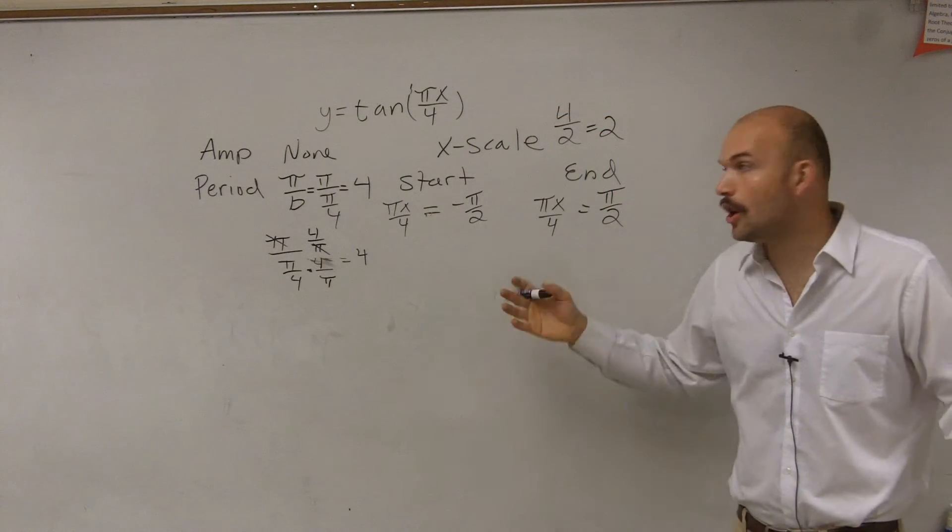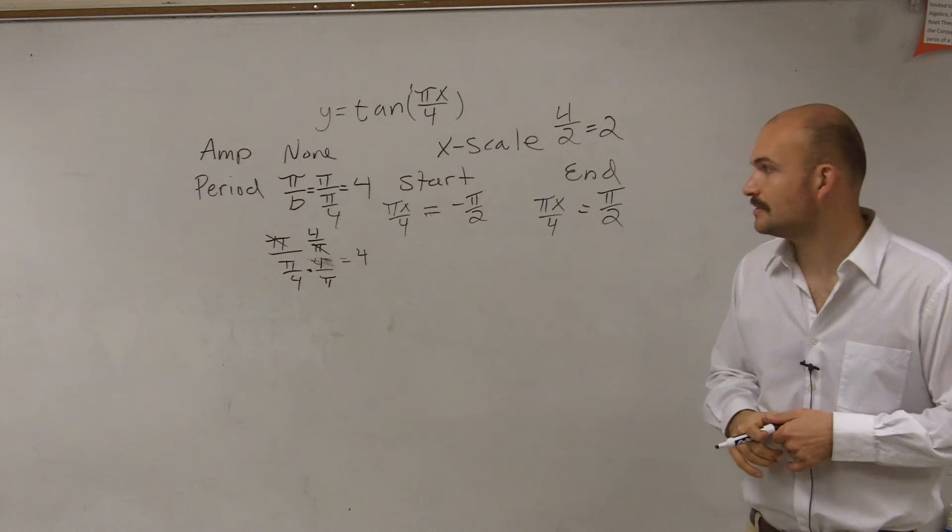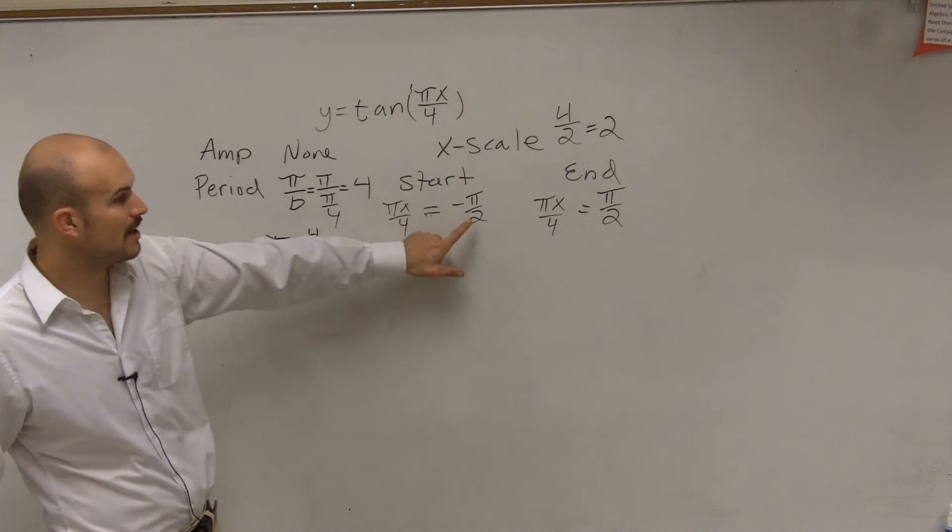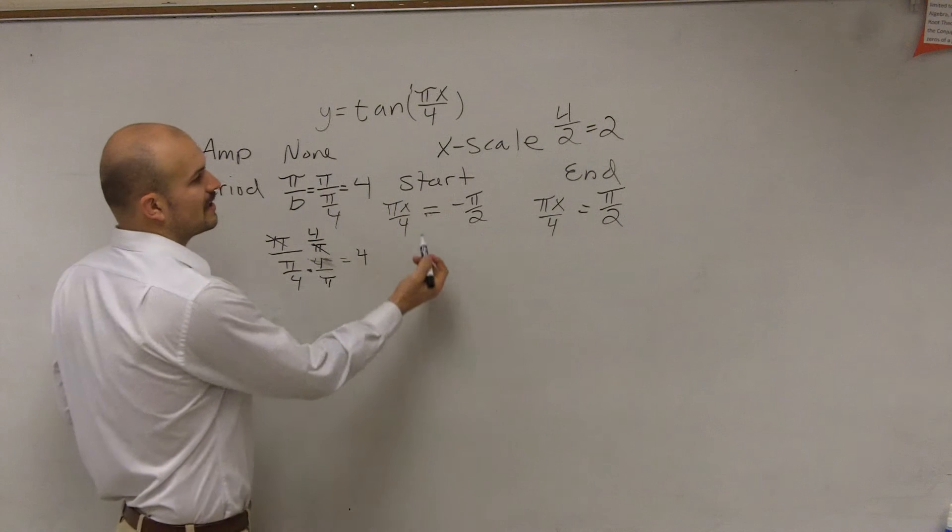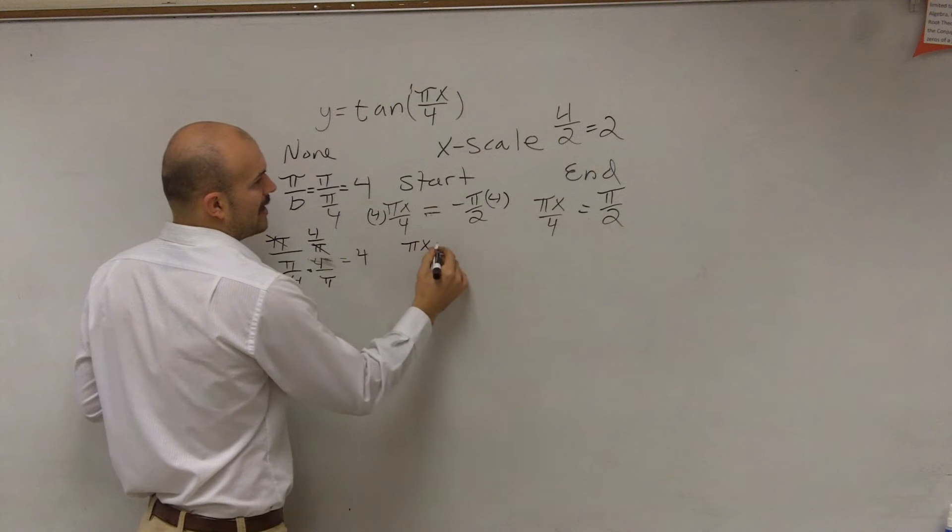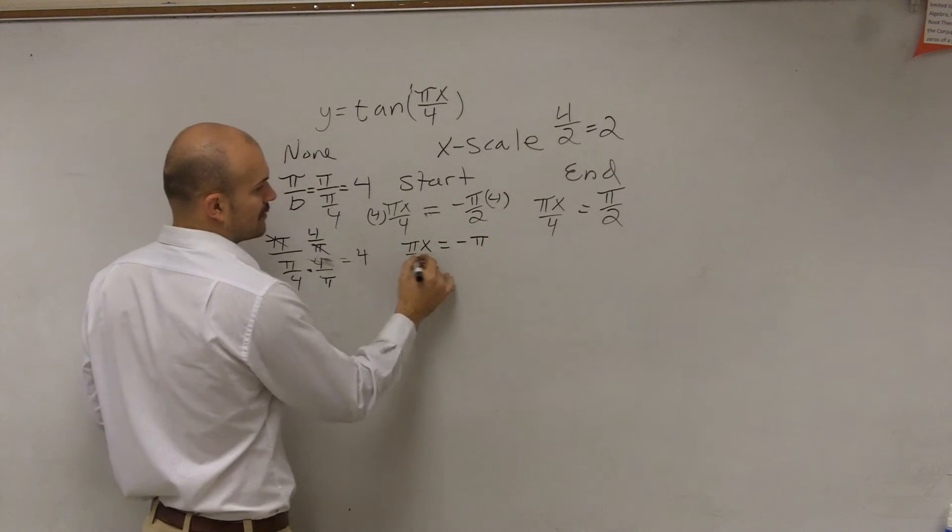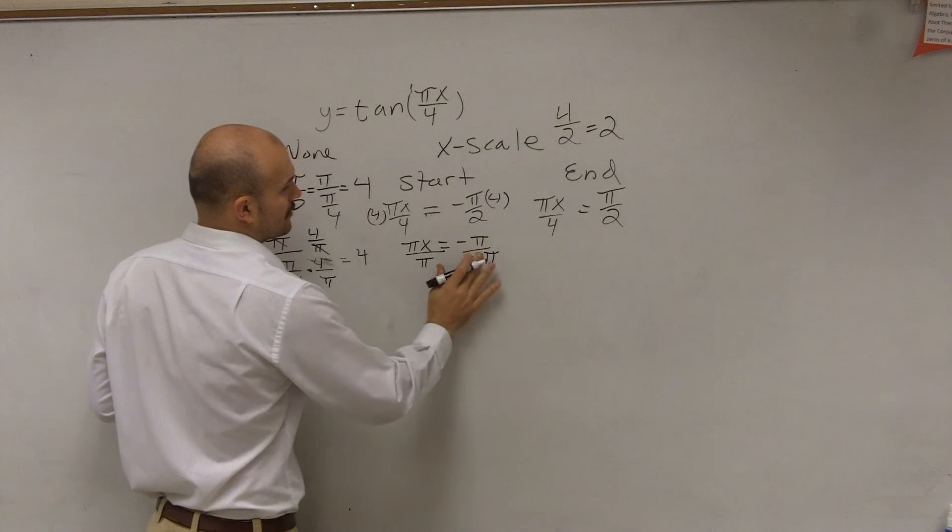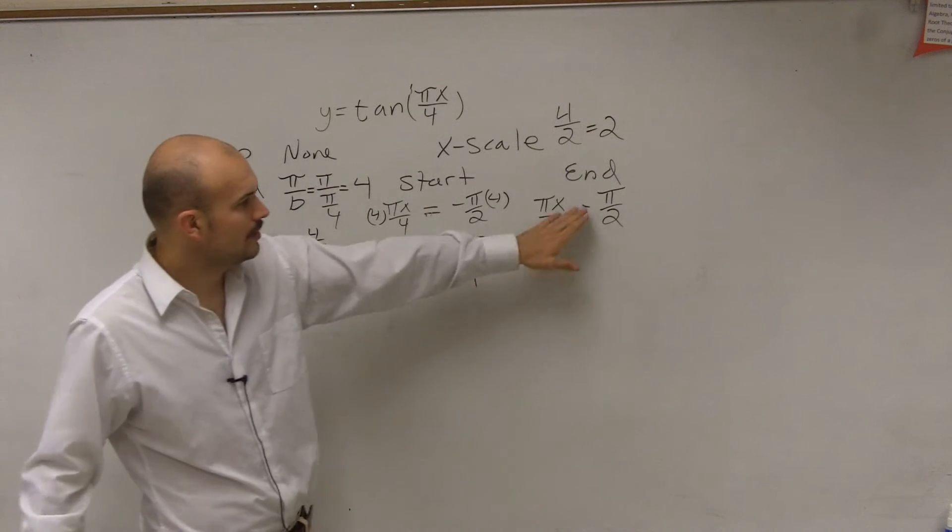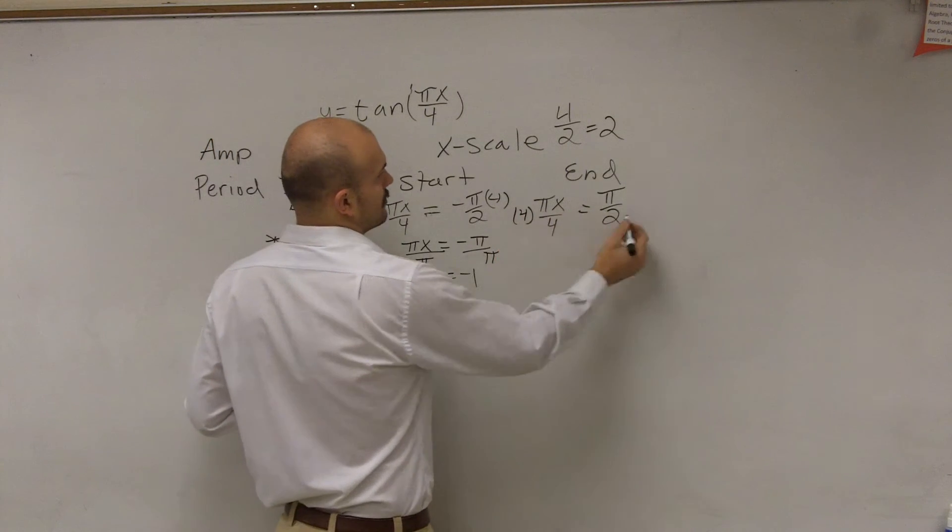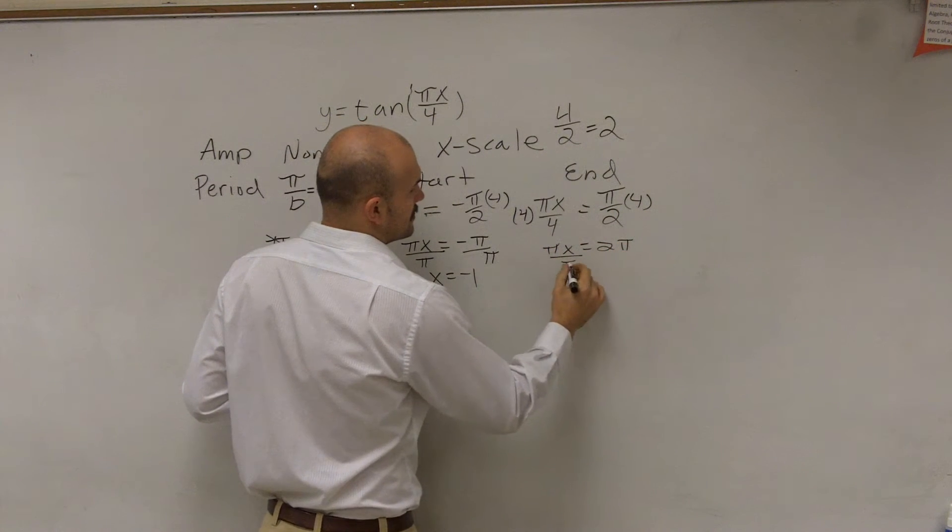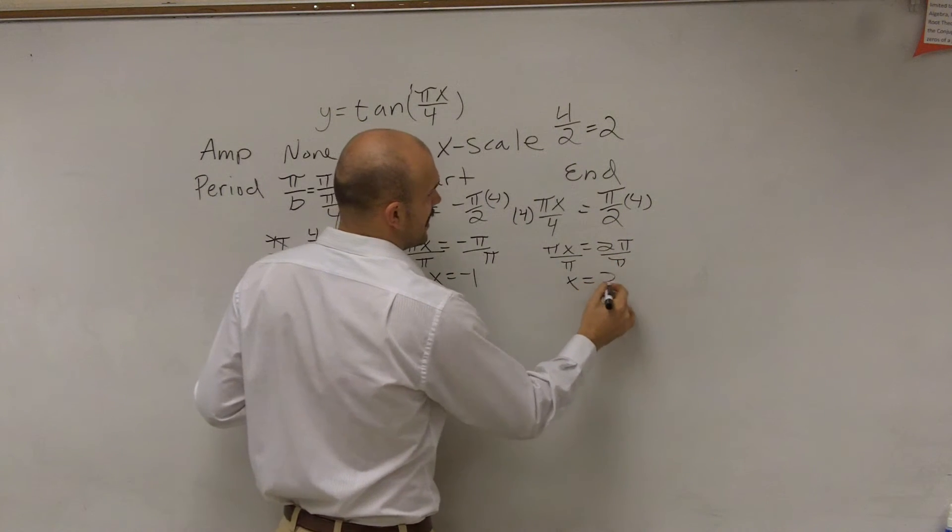So I have pi x divided by 4 and pi x divided by 4 equals pi halves. So again, we need to solve for x in each one of these cases. So to solve for x, the first thing I want to do is get rid of my fractions. The first thing I need to do is get rid of my 4. So I multiply by 4 on both sides. Therefore, I have pi x equals negative pi divided by pi divided by pi, and then x equals negative 1. So over here, I multiply by 4, and I get pi x equals 2 pi divided by pi divided by pi, x equals 2.